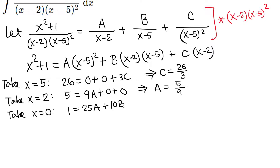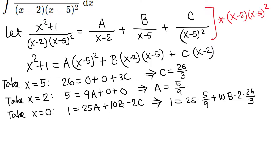Continuing with x equals 0: the C term gives (0 minus 2) times C, which is negative 2C. Plugging in A equals 5 over 9 and C equals 26 over 3, we get: 1 equals 25 times (5 over 9) plus 10B minus 2 times (26 over 3), which simplifies to 1 equals 125 over 9 plus 10B minus 52 over 3.